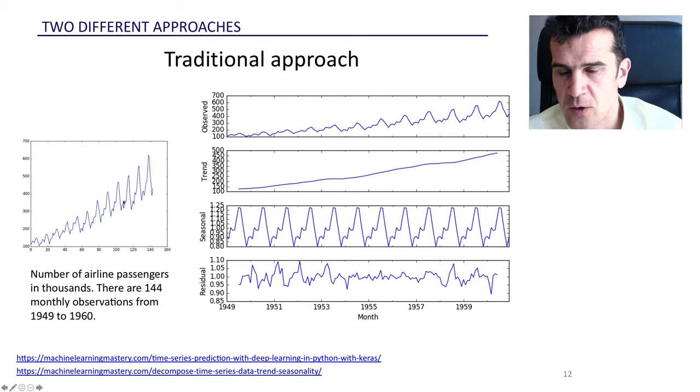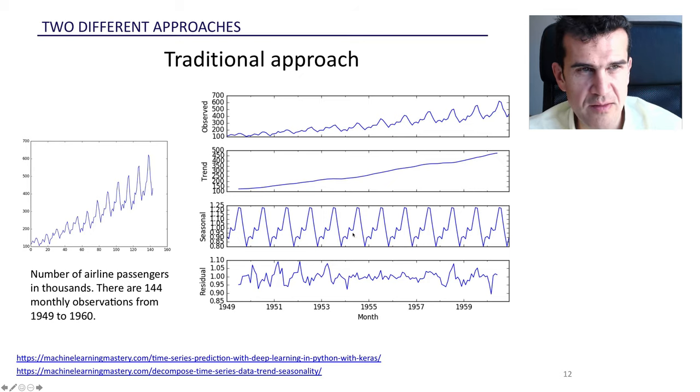An example that we will use over the presentation of this unit is this time series that shows the number of airline passengers in thousands over the years from 1949 to 1960. This is a monthly time series. Here at the top is the original time series, and here we've decomposed this time series into a trend component - the long-term evolution - the seasonal component, which in this case is yearly and shows that people tend to fly more over the summer and less over the winter, and then what is left, which is the residual.